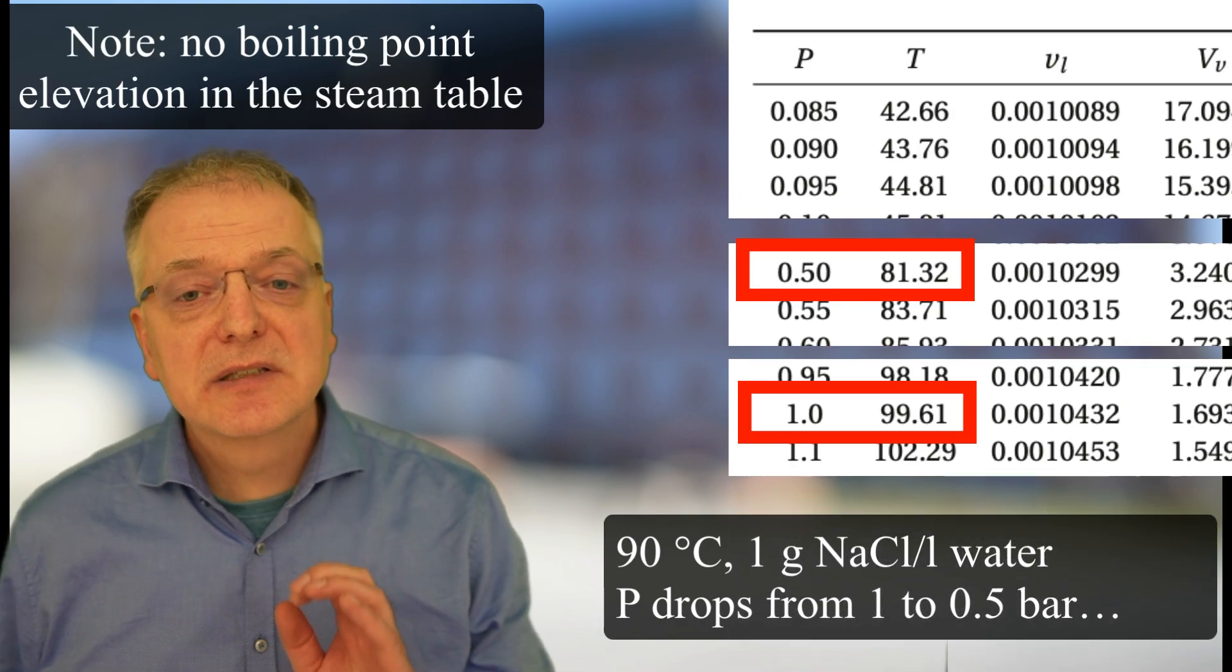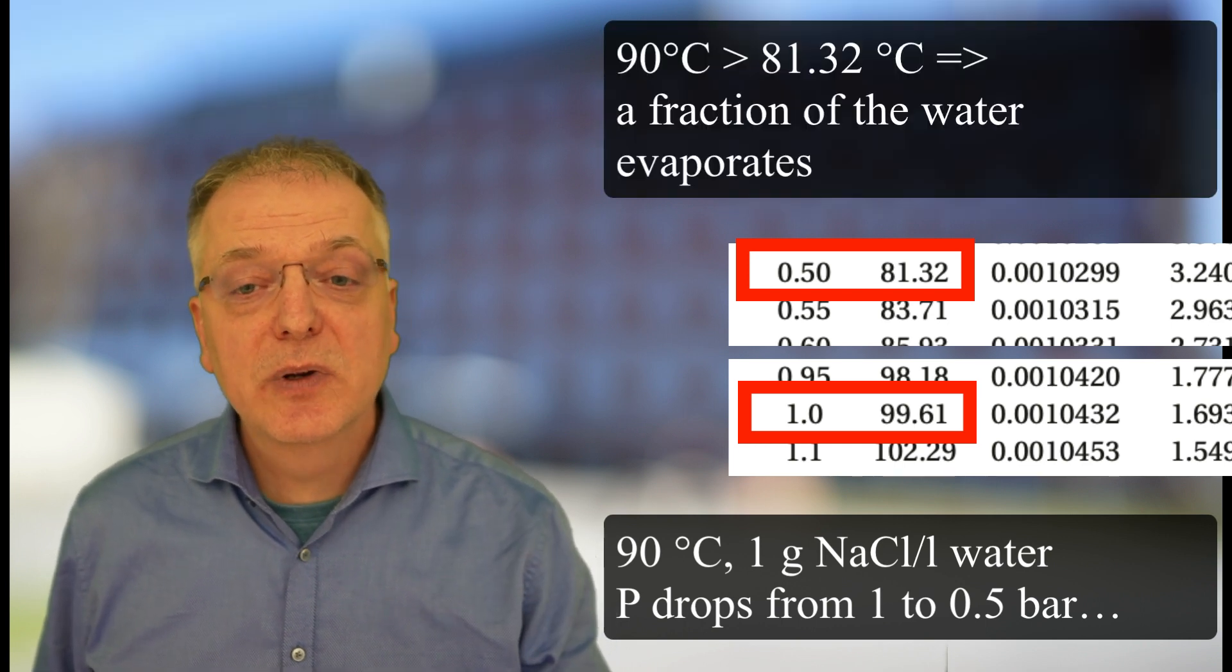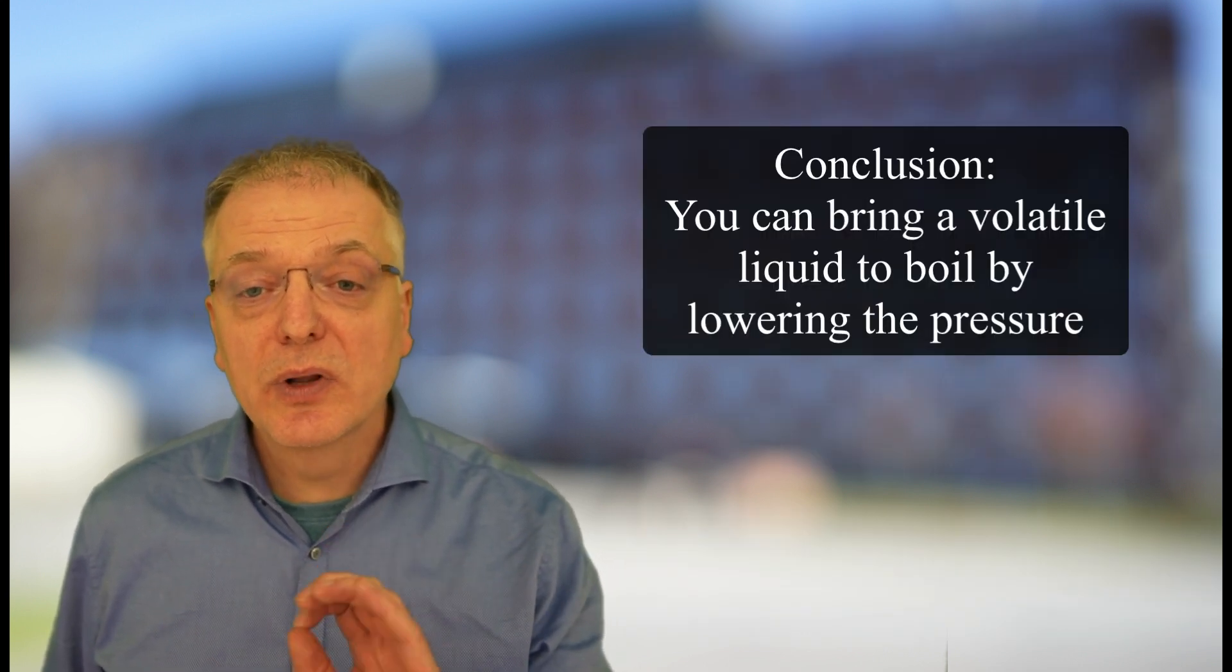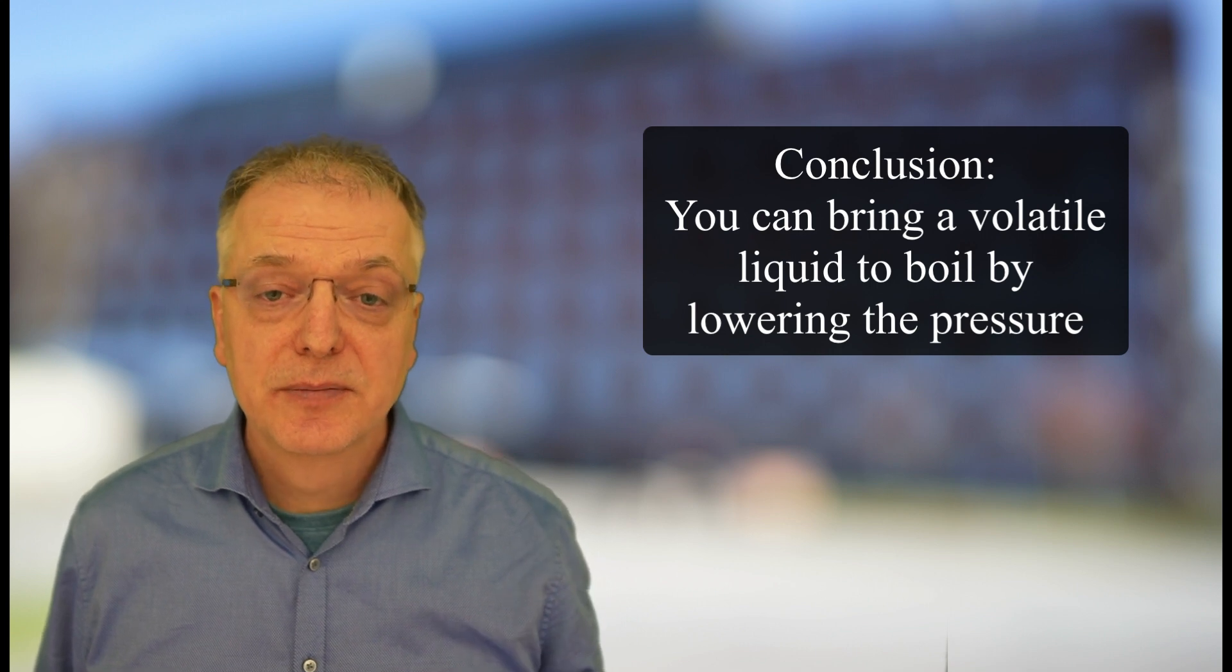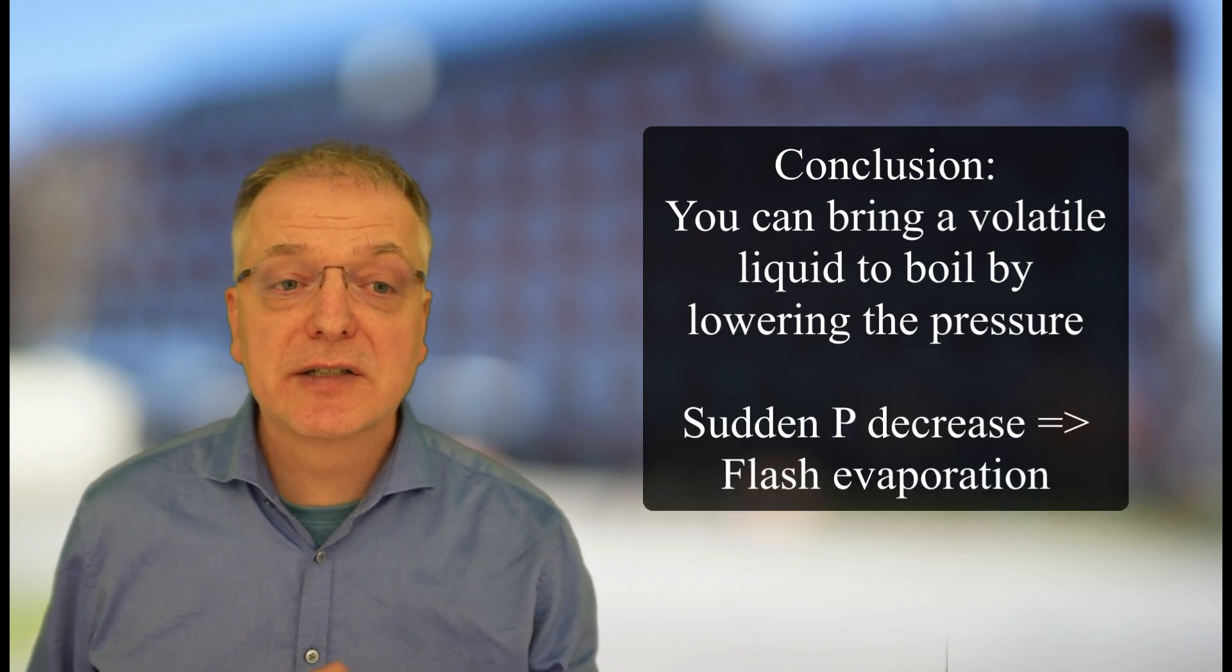What happens is that a fraction of the liquid water will turn into water vapor, and the remaining liquid fraction will have a higher concentration of sodium chloride. Thus, you can bring a solution to boil by lowering the pressure. Evaporation by suddenly lowering the pressure is called flash evaporation.